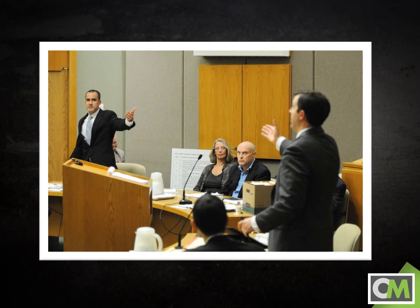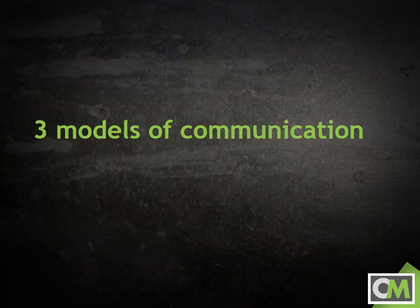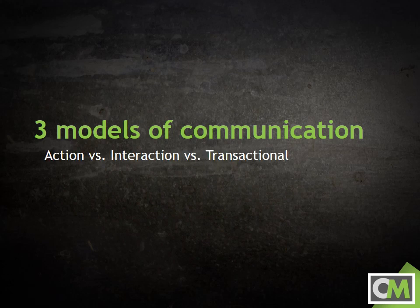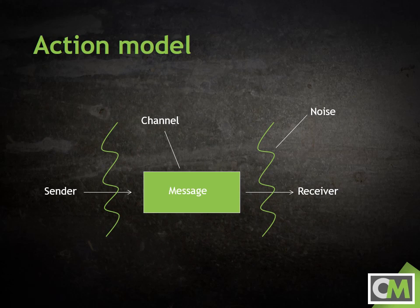These explanations just begin to scratch the surface of understanding communication. Over the years, the study of communication has developed through three basic models of the communication process. We'll take a look at each of these models and see how our understanding of communication has changed with each one. The first model developed was the action model. The action model of communication portrays communication as a one-way process — something that one person does to or at another person. In the action model, communication begins with the sender: the person who has something they're attempting to express. The sender encodes or packages a message using verbal and/or nonverbal communication to send it to a receiver. The message refers to what it is they are trying to communicate.